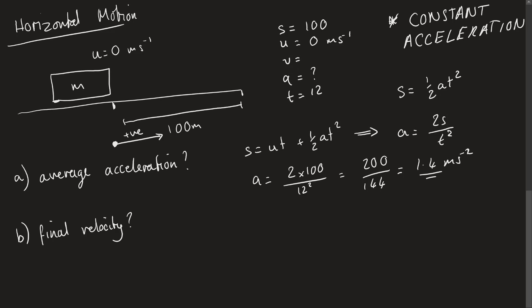Now the final velocity, if we now say that we want to know that instead, and we don't know A, so we have S, U, V, and T. So we would say for part B, S equals U plus V over 2 times T. And if we're trying to work out V in this case, we can rearrange this because U is equal to 0, so we can make it V is just equal to 2S over T, which is very similar to this one up here as well. And if this is 2S over T, this just becomes 200 divided by 12, which is about 16.7 meters per second.